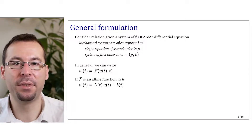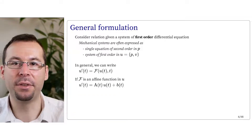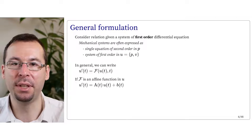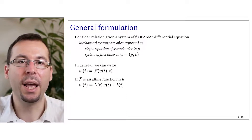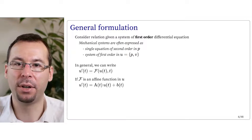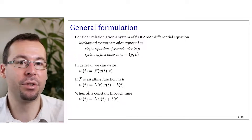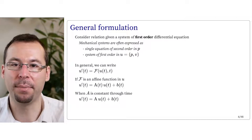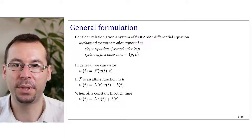In the case where f is an affine function in u, we can write u prime of t equals A of t times u of t plus b of t, where A is a matrix and b is a vector. And in some cases, A is constant through time, giving u prime of t equals A times u of t plus b of t.